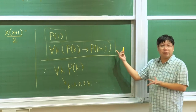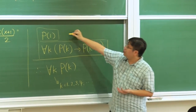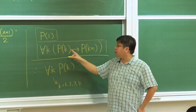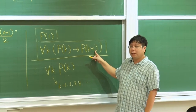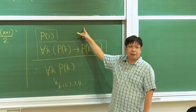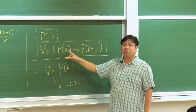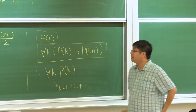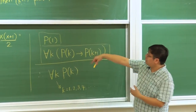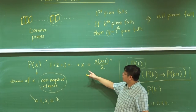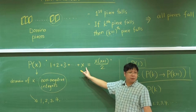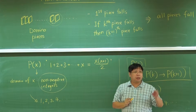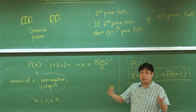Why does it work? It is like the domino. Because we have P(1), and because we have the inductive step shown to be true, then we know that P(2) has to be true. Now because P(2) is true as a mini-conclusion, applying this again, we will have P(3) to be true, and so on.